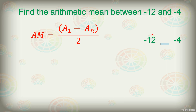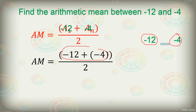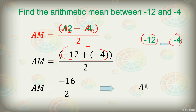Using the same formula, a sub 1 plus a sub n divided by 2. Our a sub 1, the first term, is negative 12, and a sub n, the last term, is negative 4. Writing our equation: negative 12 plus negative 4 divided by 2. Simplifying, negative 12 plus negative 4 gives us negative 16. Dividing negative 16 by 2, therefore our arithmetic mean is equal to negative 8.